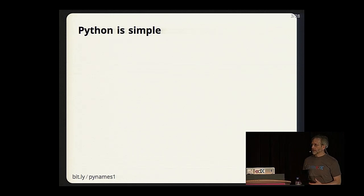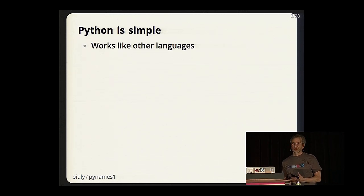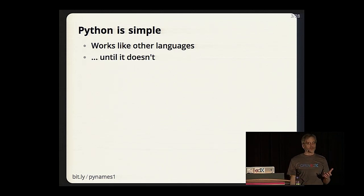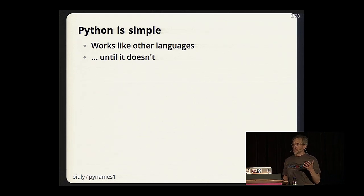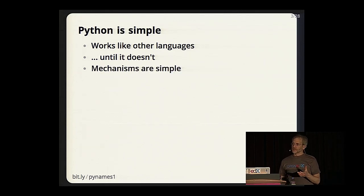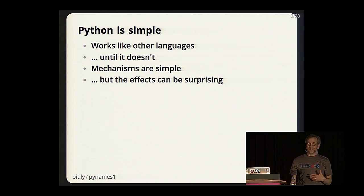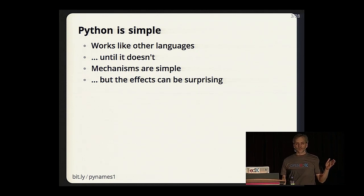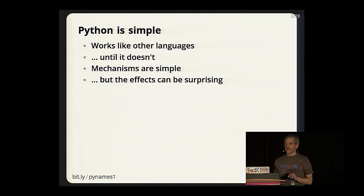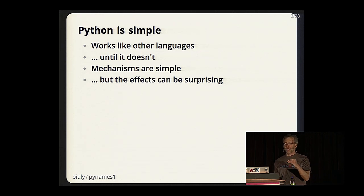Python is a very simple language. When you come to it, it often works just as you'd expect if you've worked in other languages—until it doesn't. There are surprises that will get you if you come to Python with an intuitive understanding of what might happen. Python's underlying mechanisms are very simple, but the effects can be surprising. I've personally used Python for about 10 years without being able to describe some of the things I'm going to describe to you now.